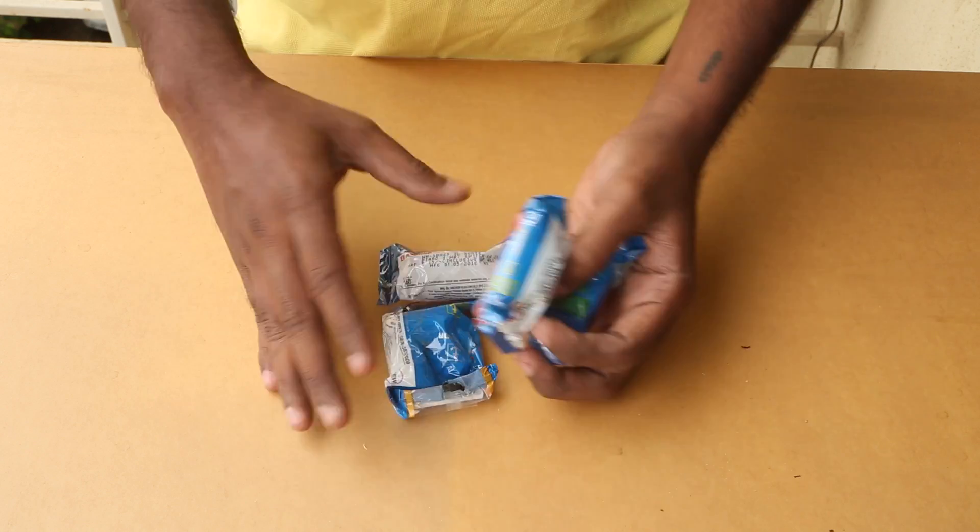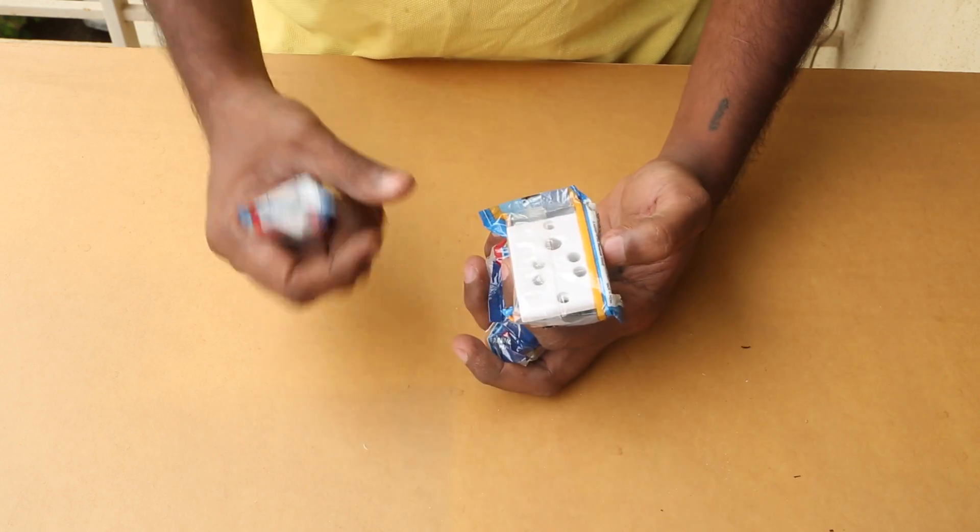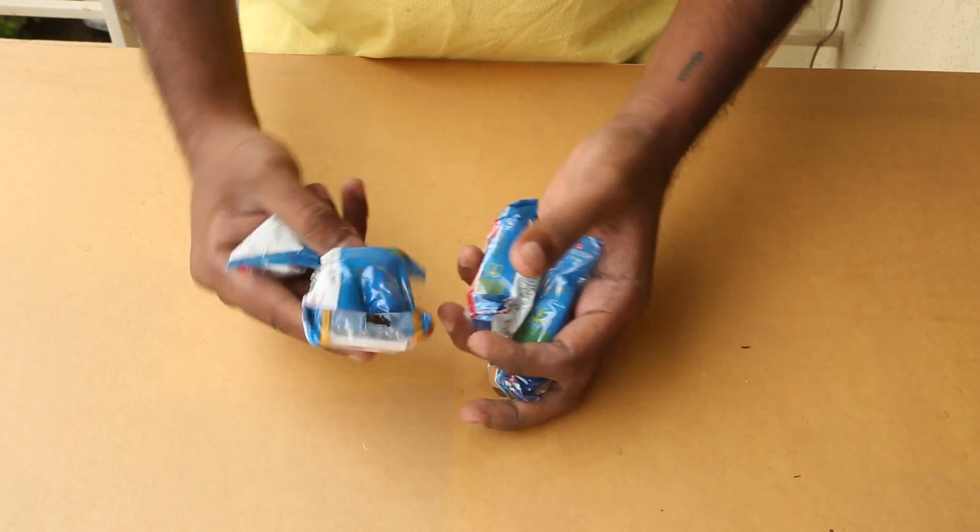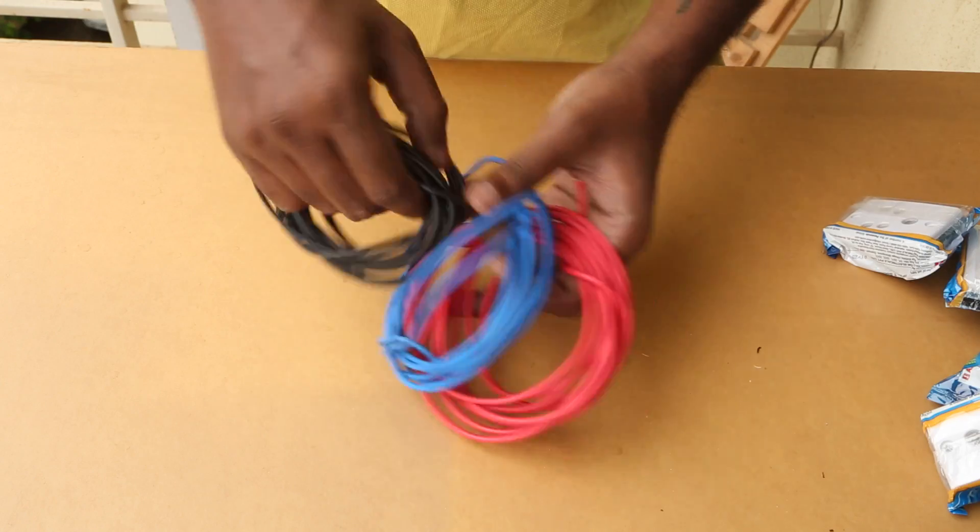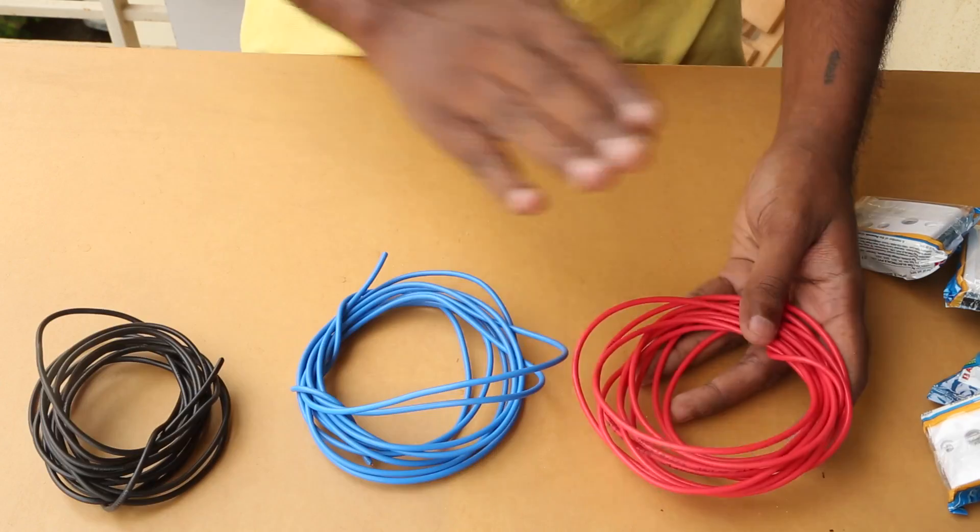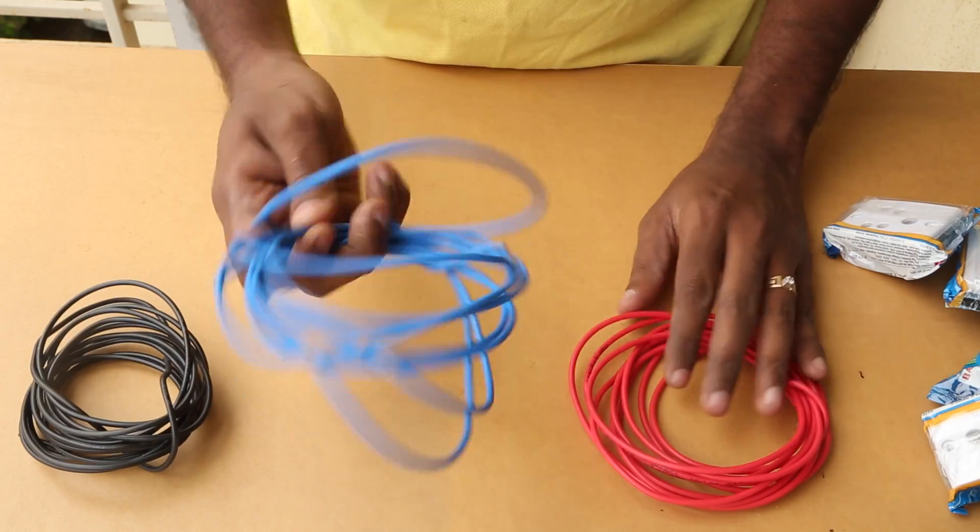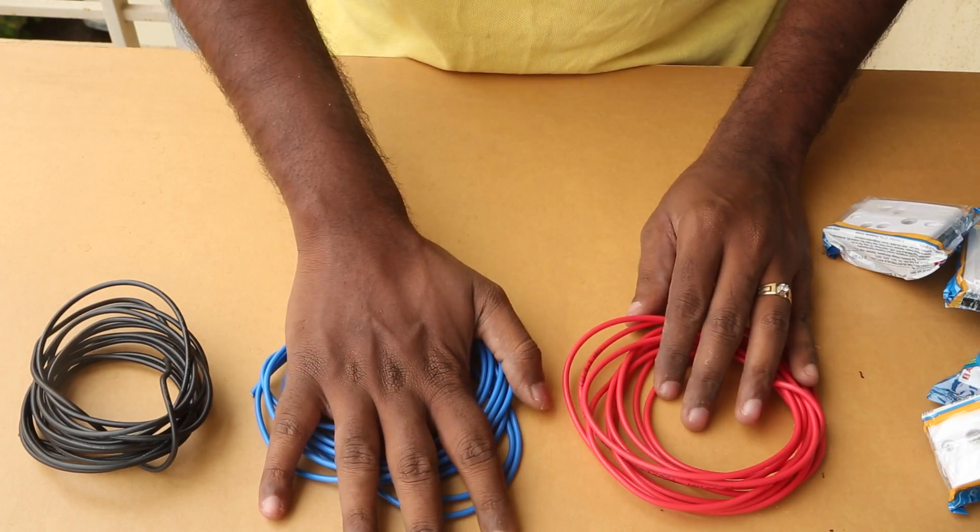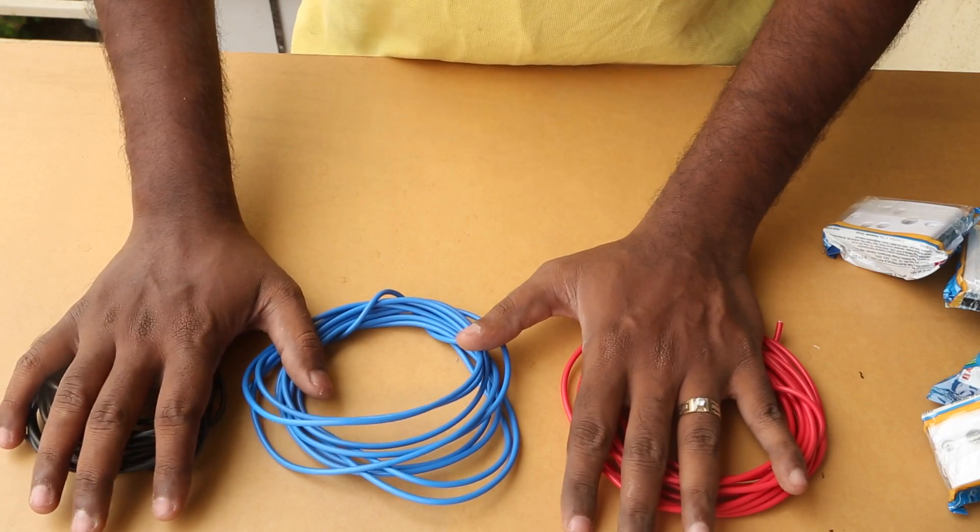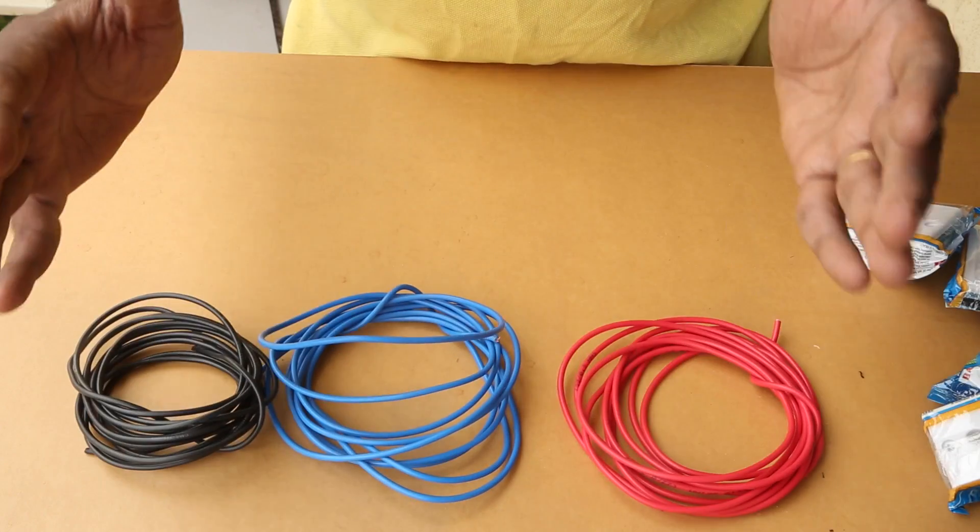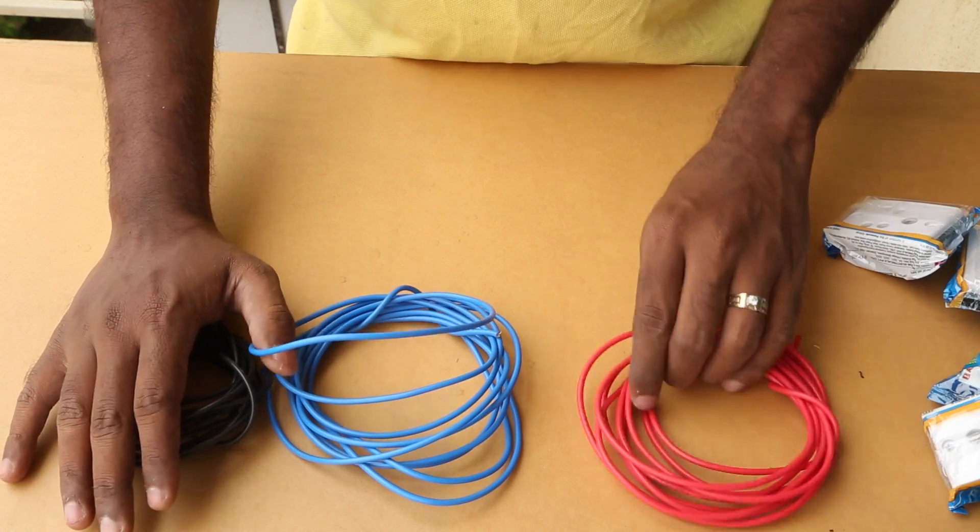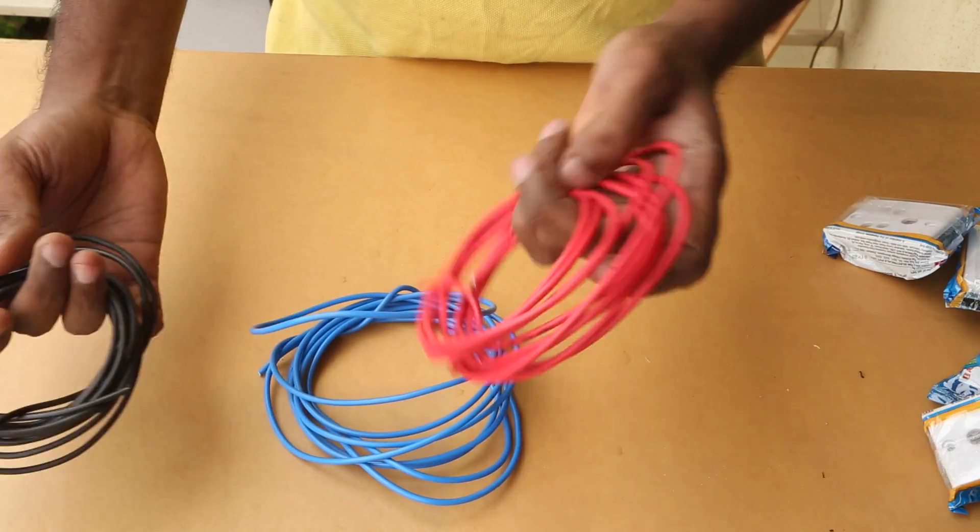All these are the different types of switches. I'm using 6 ampere rating switches and sockets. Here are three different colored wires. The red will be for the live wire, the black will be for the neutral and blue I will be using it for the earth. Although it's not necessary to use three different colors, it just makes life easier to understand which one is what. So here are the three different colors.